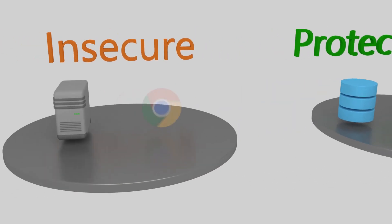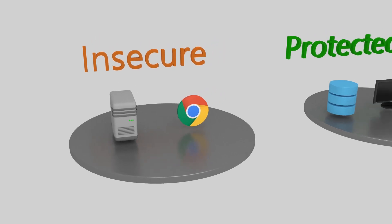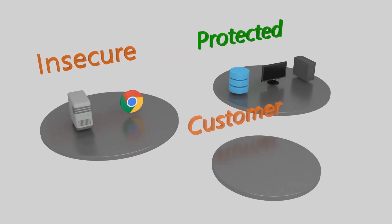The insecure network is any area that we don't have security control over. However, we still need to access its resources, or something in that network may need to access ours. A prime example of this is the internet, but we also think of a network managed by a business partner, such as a supplier or a customer. We don't manage the security of these networks, so we should not assume that they are secure.